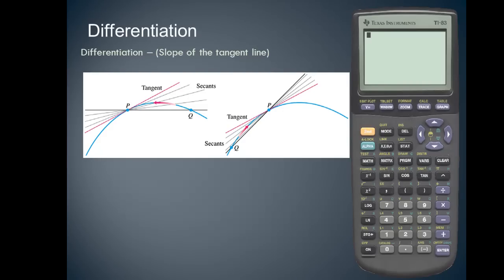If you take a look at the two examples, the blue curve is the given line, the red line is the tangent line, and notice that in both of the drawings the tangent line touches the blue line at one and only one point — thus the definition of a tangent line.